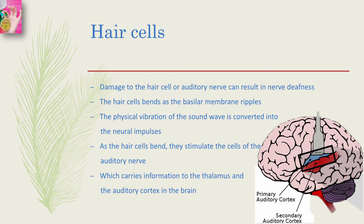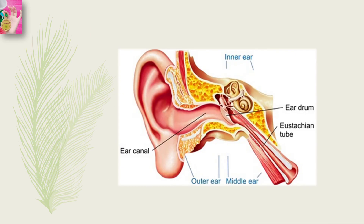Damage to the hair cells or auditory nerves can result in nerve deafness, which cannot be helped by a hearing aid, and exposure to loud noise can cause nerve deafness. The hair cells bend as the basilar membrane ripples, and it is here that transduction finally takes place — the physical vibration of sound waves is converted into neural impulses. As the hair cells bend, they stimulate cells of the auditory nerve, which carries the neural information to the thalamus and the auditory cortex in the brain.